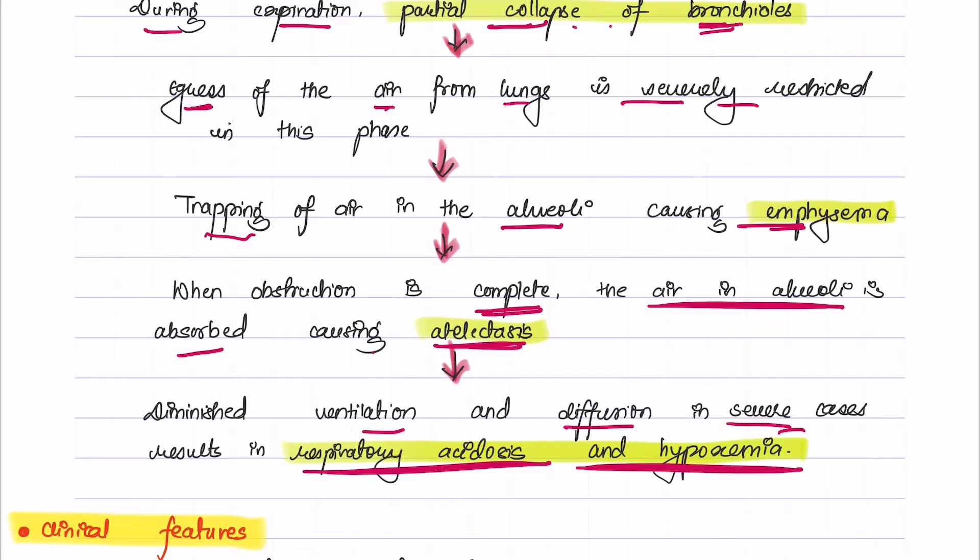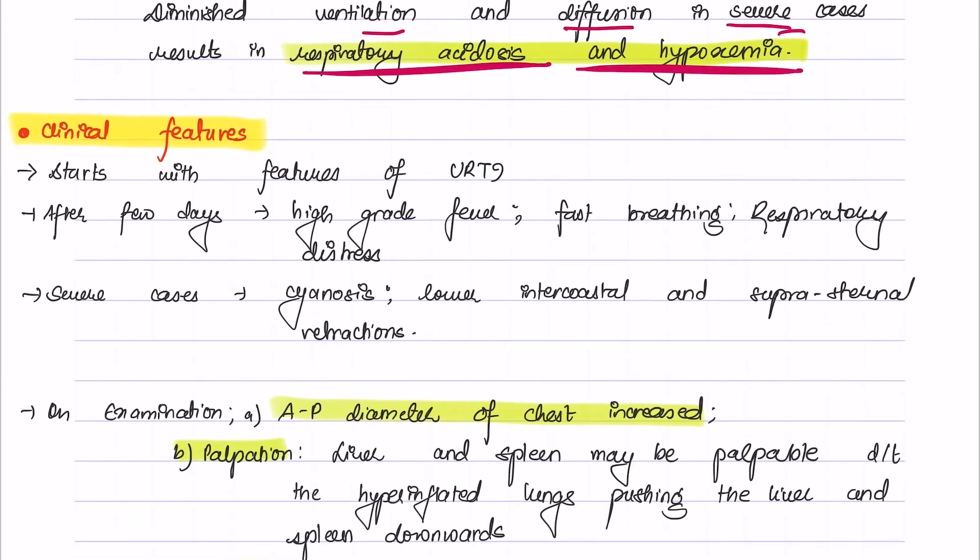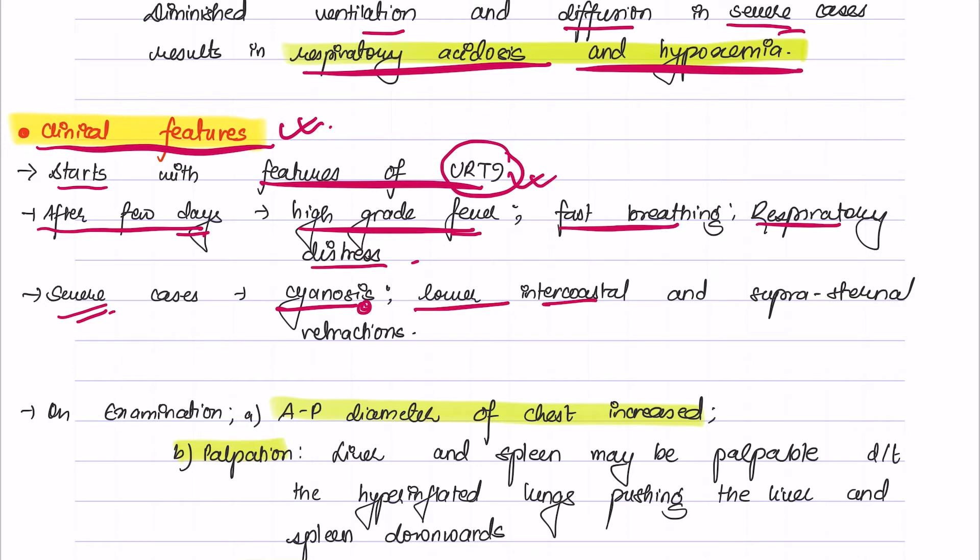The clinical features of bronchiolitis are as follows: Bronchiolitis usually starts with features of upper respiratory tract infection, which after a few days is followed by high-grade fever, fast breathing, and respiratory distress. In severe cases, the baby will present with cyanosis, lower intercostal and suprasternal retractions.